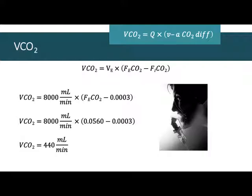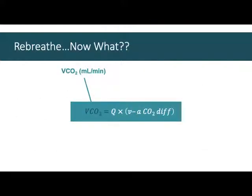The next easiest value to calculate is arterial CO2 — this is just the end-tidal CO2 measured in the breath. No rebreathe, no trapping CO2. End-tidal CO2 quickly and completely equilibrates with arterial CO2, so it's just measured by the metabolic cart. That's pretty straightforward.